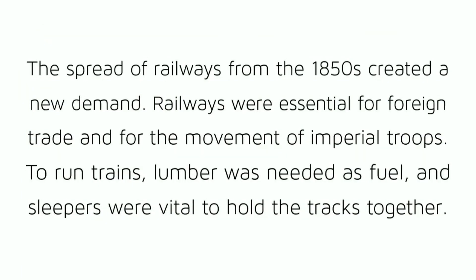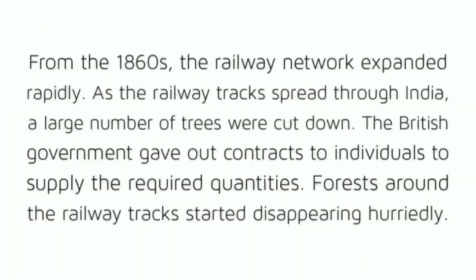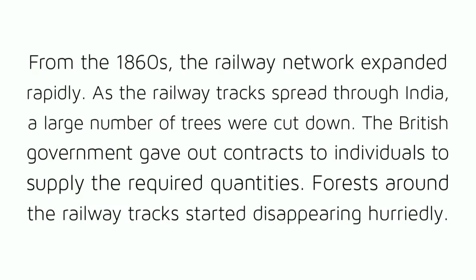The spread of railways from the 1850s created a new demand. Railways were essential for foreign trade and for the movement of imperial troops. To run trains, lumber was needed as fuel, and sleepers were vital to hold the tracks together. From the 1860s, the railway network expanded rapidly. As the railway tracks spread through India, a large number of trees were cut down. The British government gave out contracts to individuals to supply the required quantities, and forests around the railway tracks started disappearing rapidly.